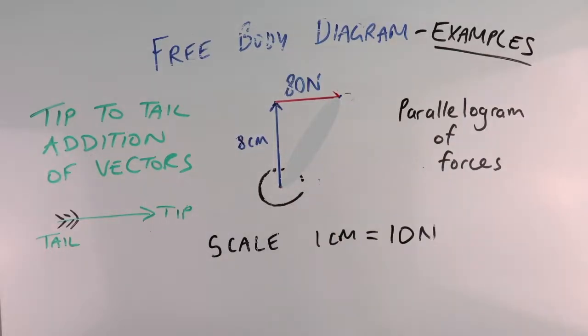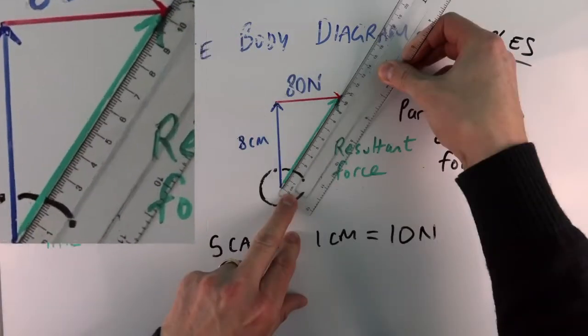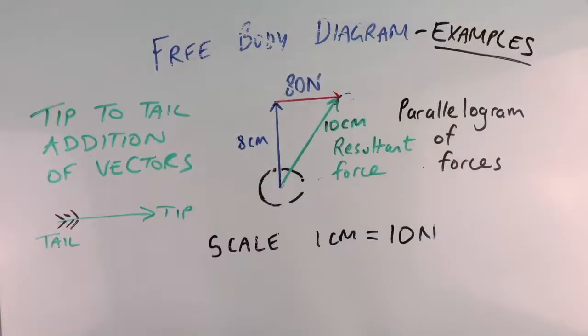Once you have your vectors lined up, tip-to-tail, you simply need to draw another arrow from the start of the first arrow to the end of the last arrow. This new arrow is the net force or resultant force. This could also be referred to as a scale diagram. Because it's a scale diagram, all you need to do to find out the size of this resultant force is to measure it with your ruler. In this example, we used a scale of 1 centimeter equals 10 newtons. So this arrow is 10 centimeters long, so that means 100 newtons.